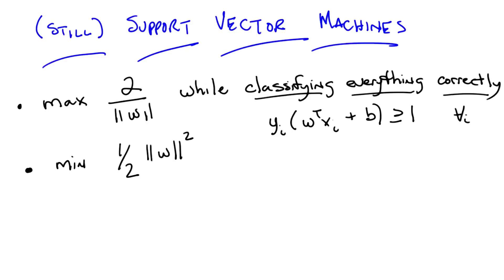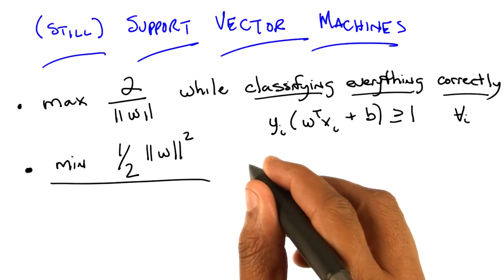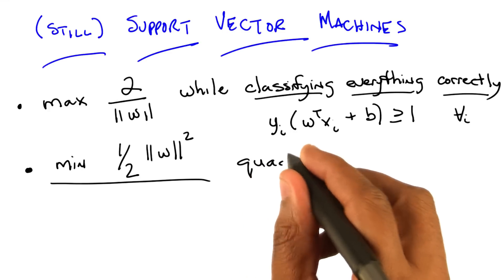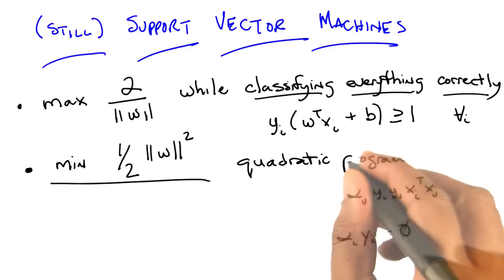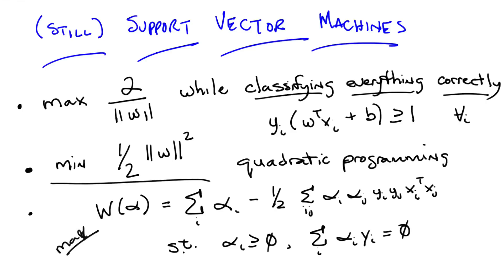Okay, fair enough. So, in particular, it turns out that we can transform, again, this particular quadratic programming problem into a different quadratic programming problem. Or actually, truthfully, into the normal form for a quadratic programming problem, that has the following form. So, here's what this equation tells you, Michael.